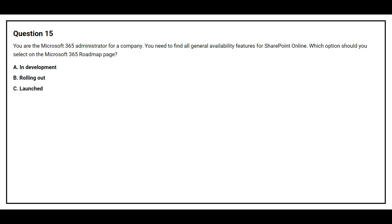Question number 15. You are the Microsoft 365 administrator for your company. You need to find all general availability features for SharePoint Online. Which option should you select on the Microsoft 365 Roadmap page? Option A: In Development. Option B: Rolling Out. Option C: Launched. The correct answer is Option C, Launched.